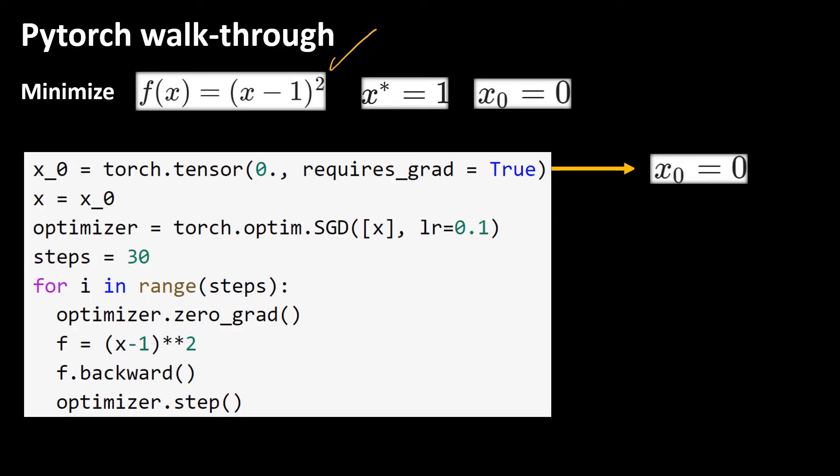We know this function is a strongly convex function so it has a unique global minimizer which is x star equals to one. We start from x_0 equals to zero as our initial value. Now let's start understanding the code from the beginning right here.